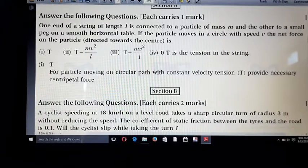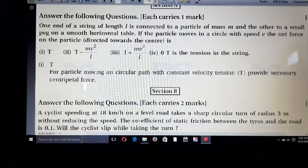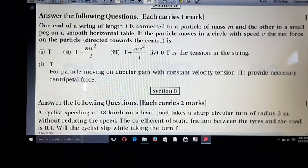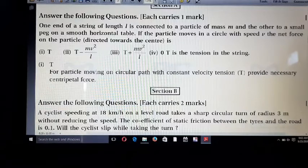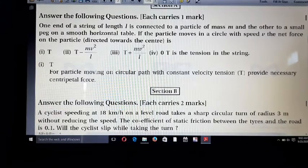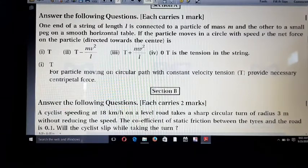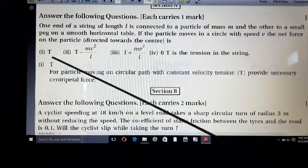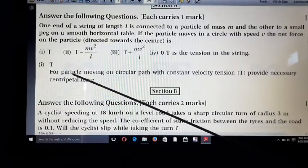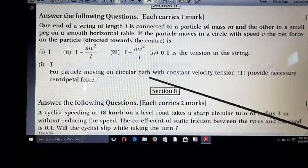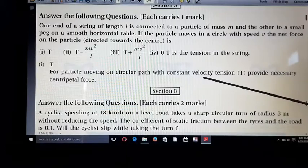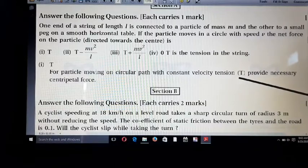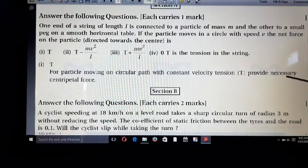So friends, here in the string, tension force is created. This tension force is always in the direction of the centripetal force. So we can say that here tension force T is created. For particle moving on a circular path with constant velocity, tension T provides the necessary centripetal force.